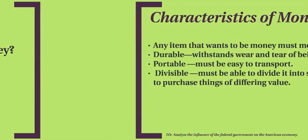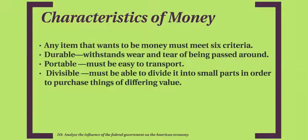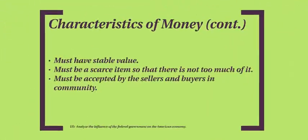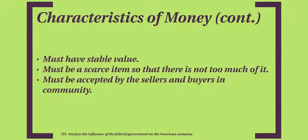Now let's talk about the characteristics of money. Anything that we might use as money needs to meet six criteria. Number one, it needs to be durable — it withstands the wear and tear of being passed around. It needs to be portable, meaning it has to be easy to transport. It needs to be divisible — it must be possible to divide it into smaller parts to purchase things of differing value. It must have a stable value. It must be a scarce item so that there's not too much of it. And finally, it must be accepted by sellers and buyers in a community.